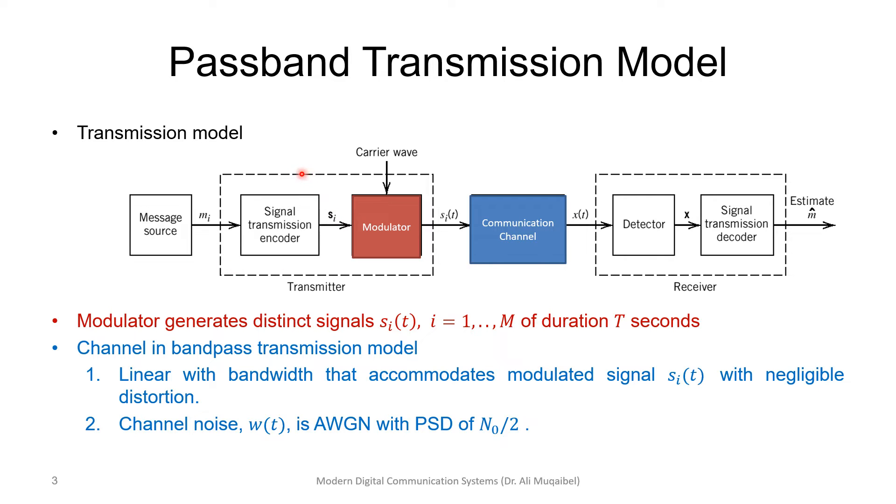We have then to encode the signal. We have the modulator, the communication channel, and then the detector at the receiver side.